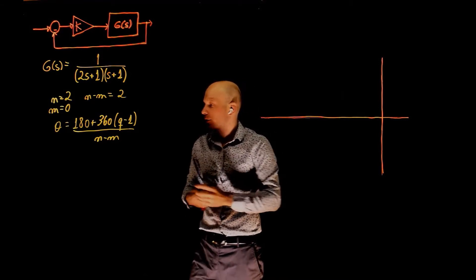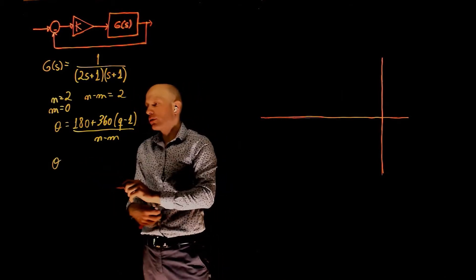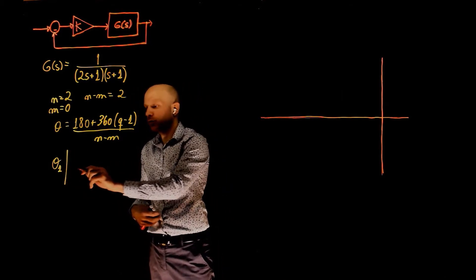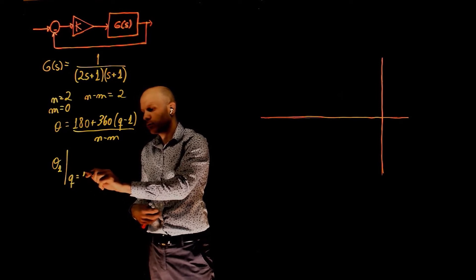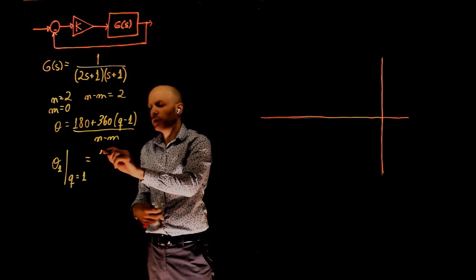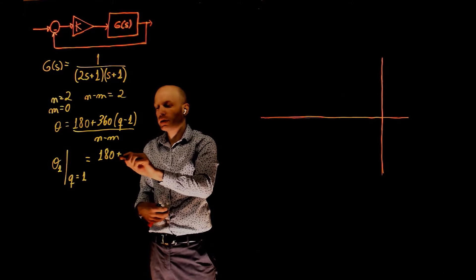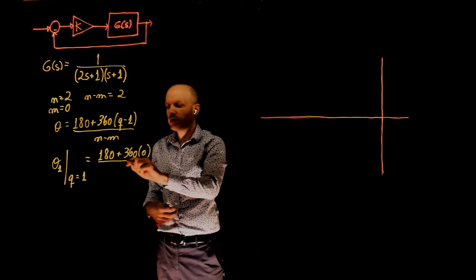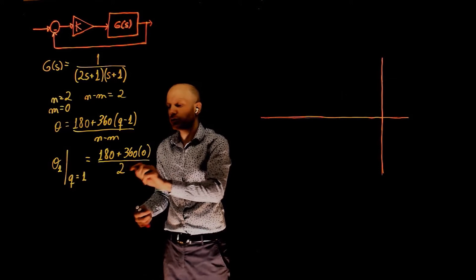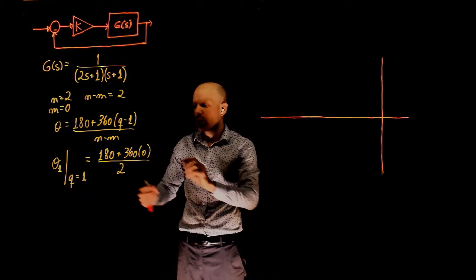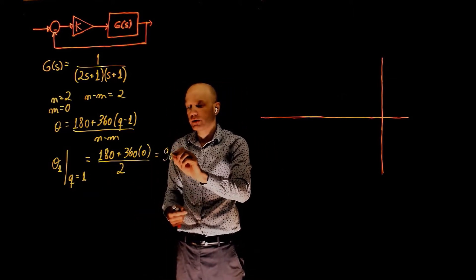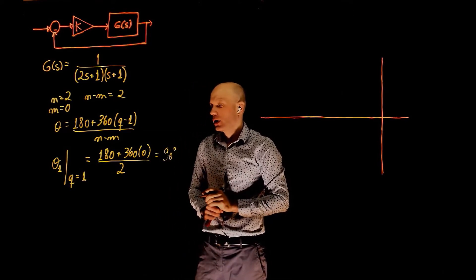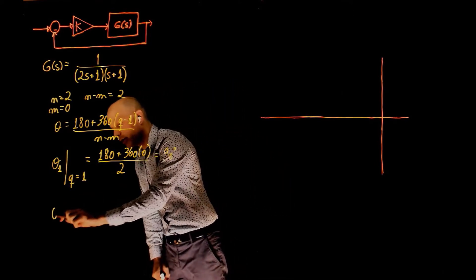Now theta1 is calculated when q equals 1 and that is going to be 180 plus 360 times 0 divided by n minus m, that's 2. Theta1 is positive 90 degrees. And now we can calculate theta2 for q equals 2.